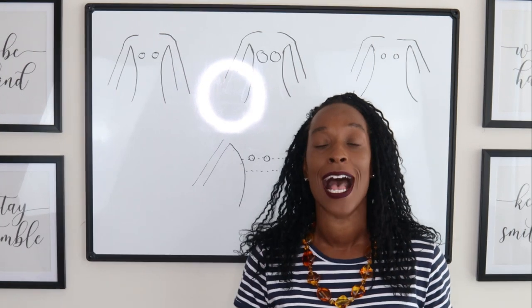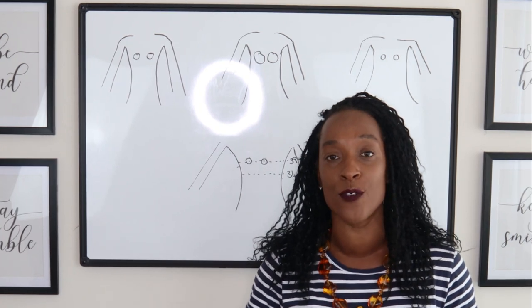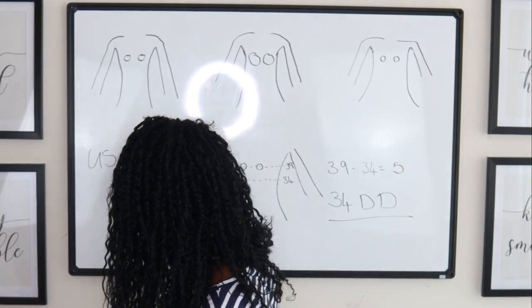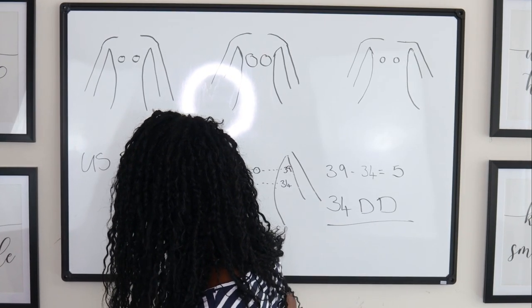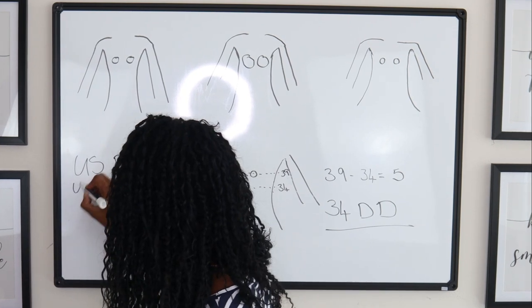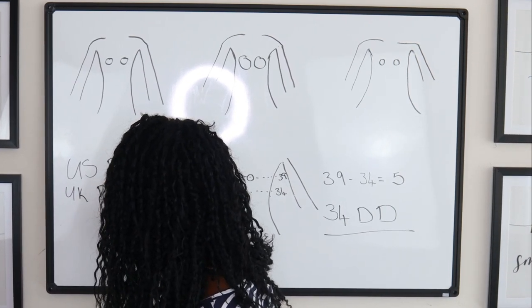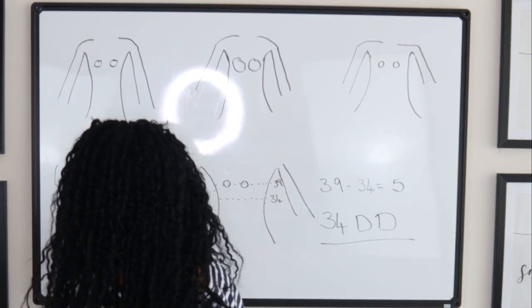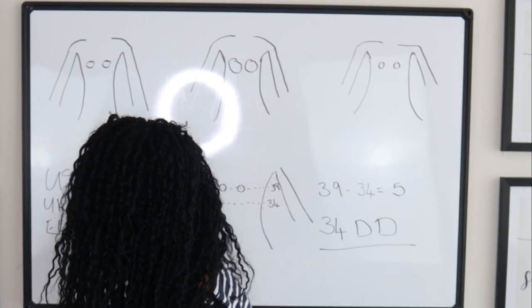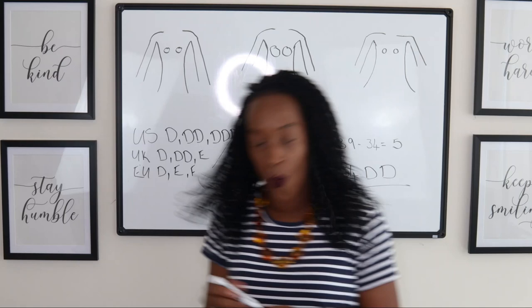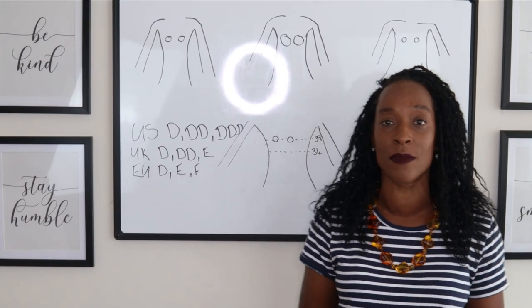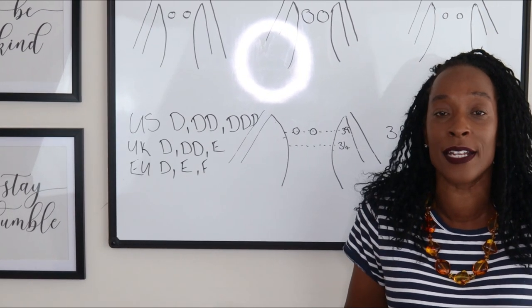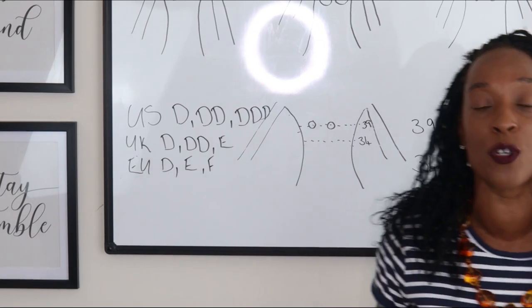Each country has its own measure for anything over a D cup. For instance, the US has D, double D, and triple D, and the UK has D, double D, and E. In Europe they have a different size - they have D, E, F. You can see where the confusion comes when it comes to trying to work out what cup sizes are and how cup sizes work and what size is going to work for you.